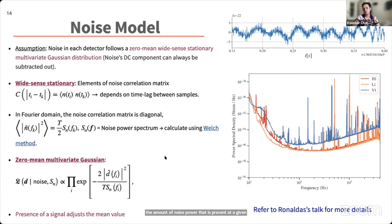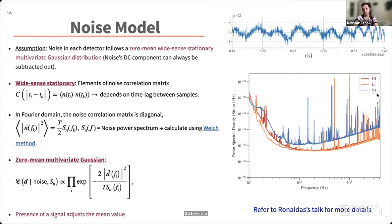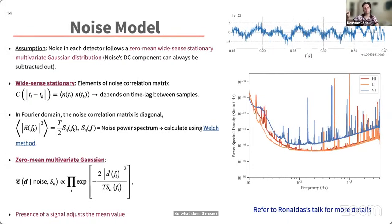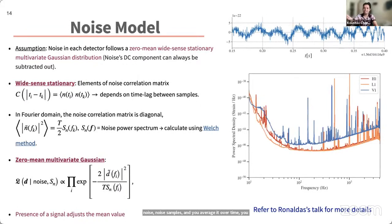By examining the noise power spectral density, we can determine how sensitive our gravitational wave detector is. A plot of the noise PSD for the Hanford, Livingston, and Virgo detectors shows that Virgo is the least sensitive of the three, while Livingston outperforms Hanford especially at lower frequencies. 'Zero mean' means that if you average the noise samples over time, the mean value is zero — the noise rapidly oscillates about zero and averages out.